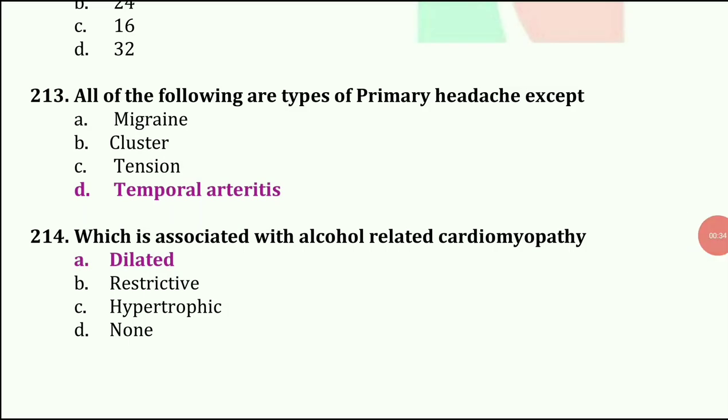All of the following are types of primary headache except temporal arteritis. Which is associated with alcohol-related cardiomyopathy? The answer is dilated cardiomyopathy.